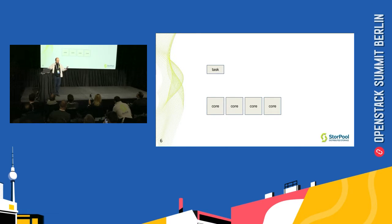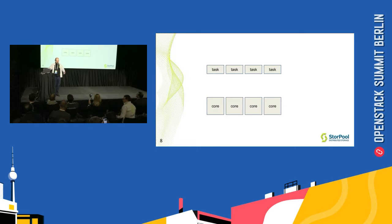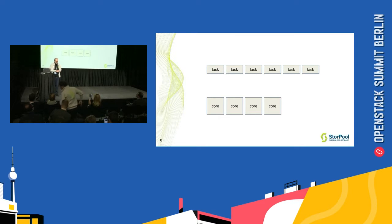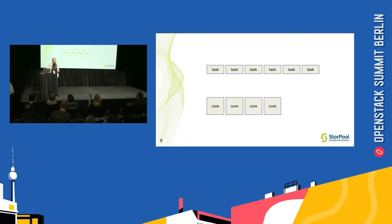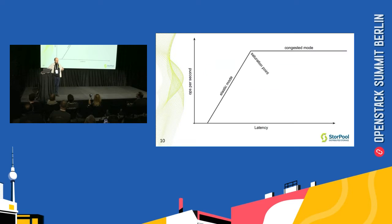For example, one task on four cores takes one second; two tasks, one second; four tasks, still one second. So this is still one second per task completed. Where this model breaks is when you get six tasks on four cores or more — then it's not six tasks at one second per task, it's six tasks at 1.5 seconds per task. You didn't do more work; you just hit what we call a saturation point.